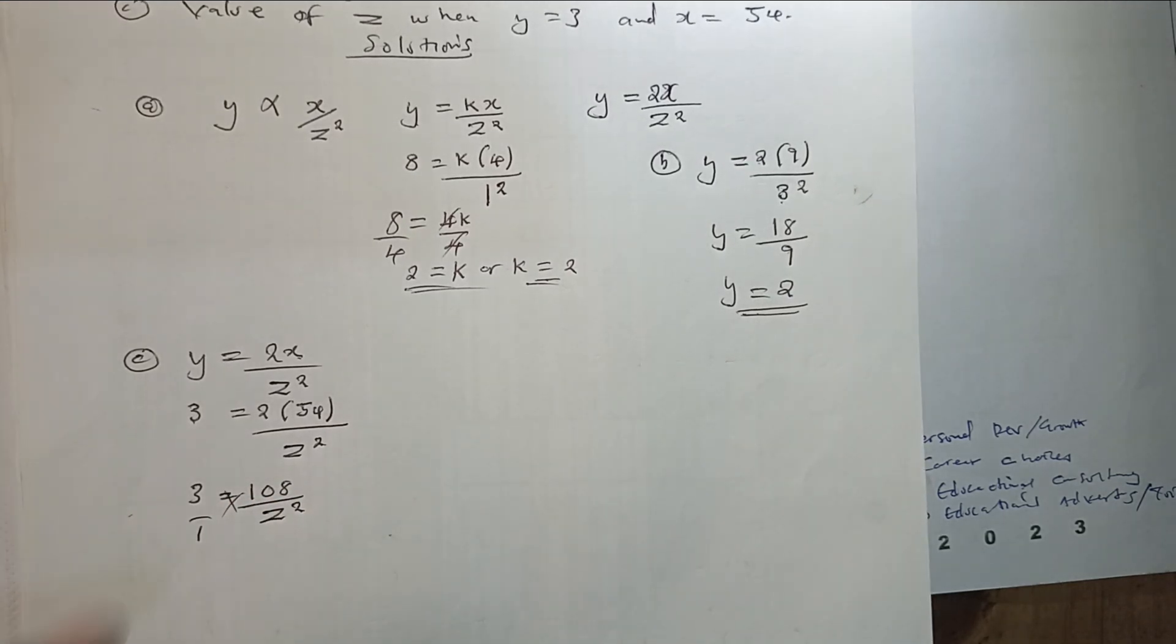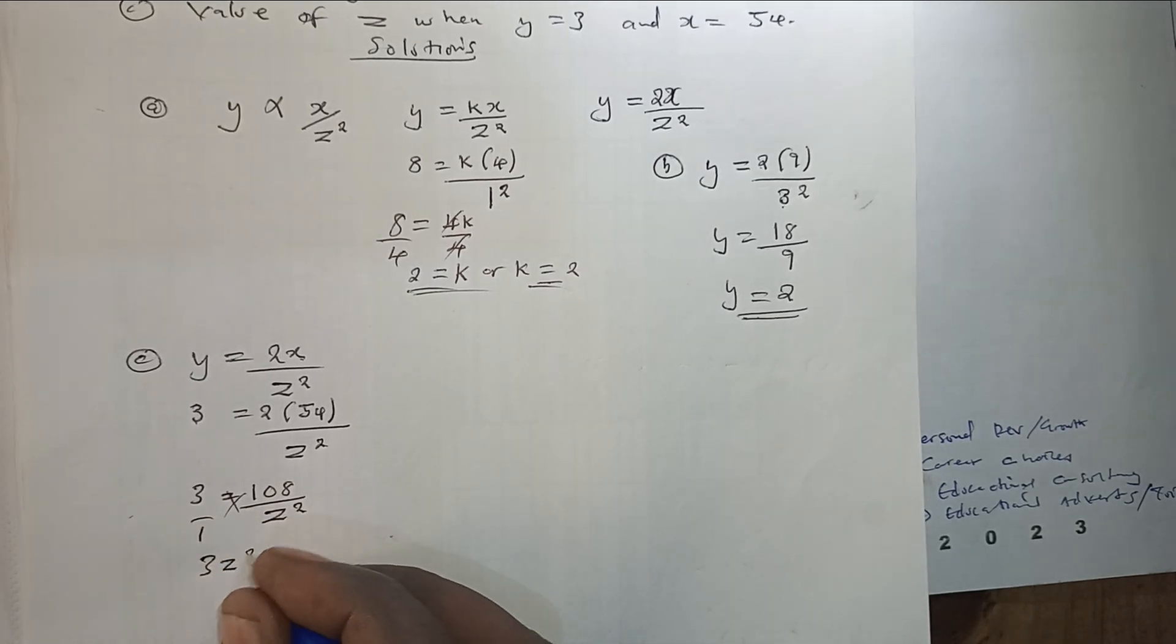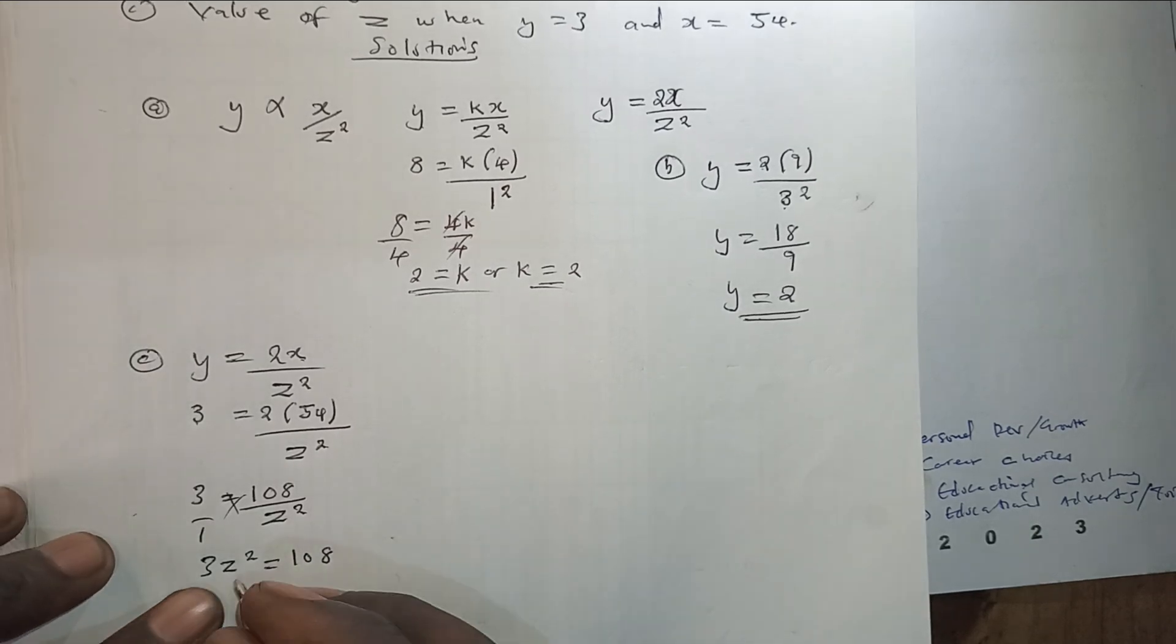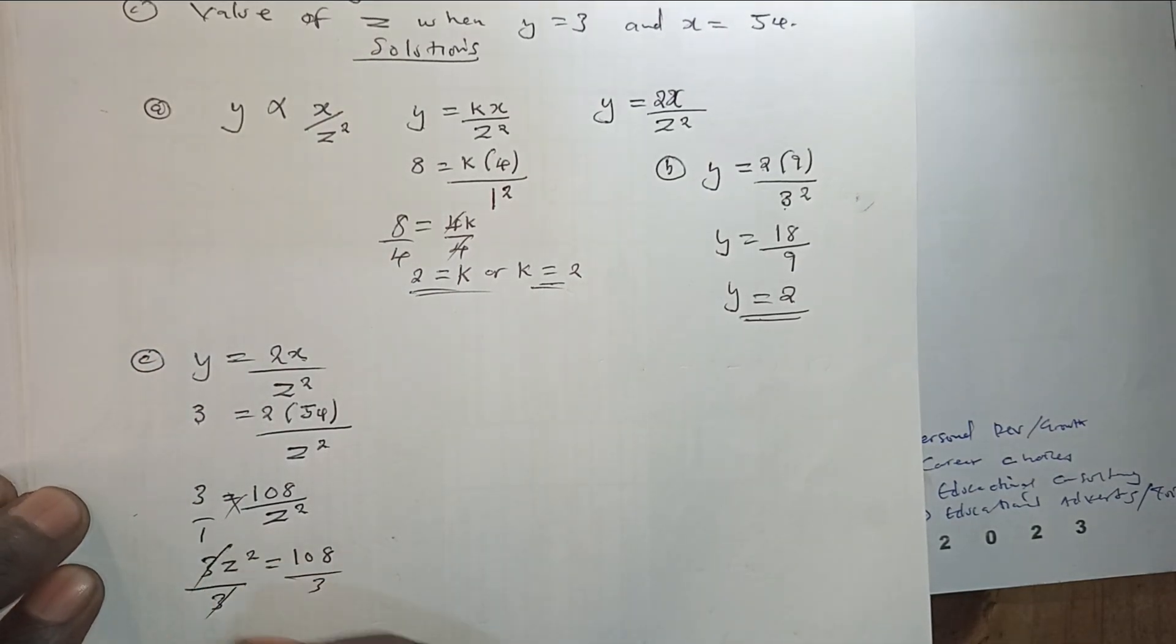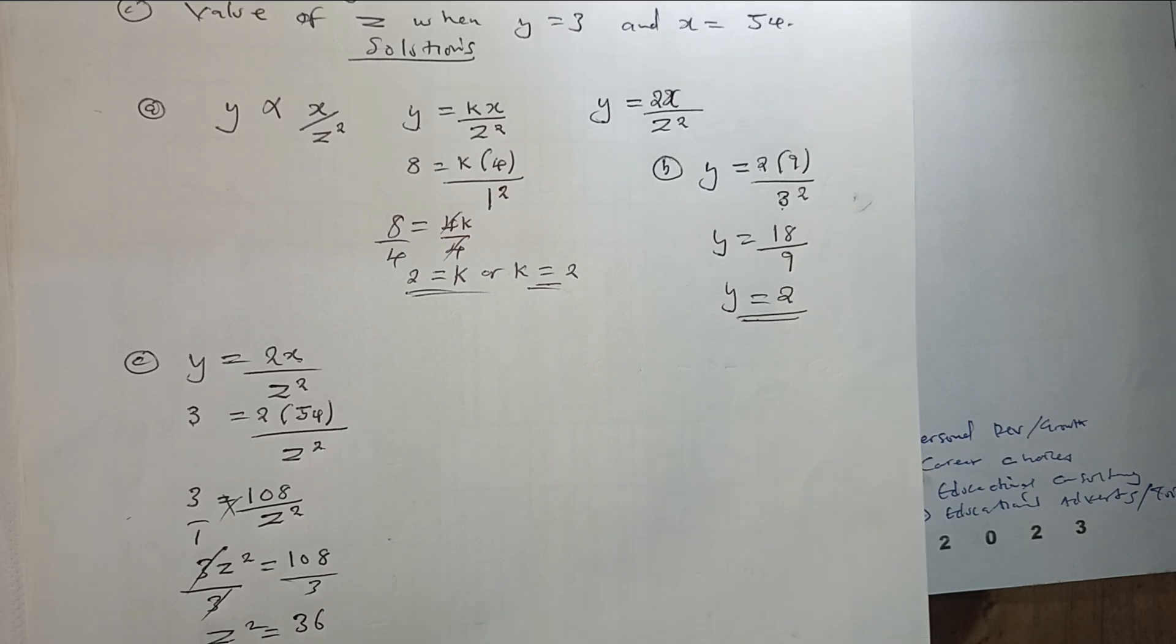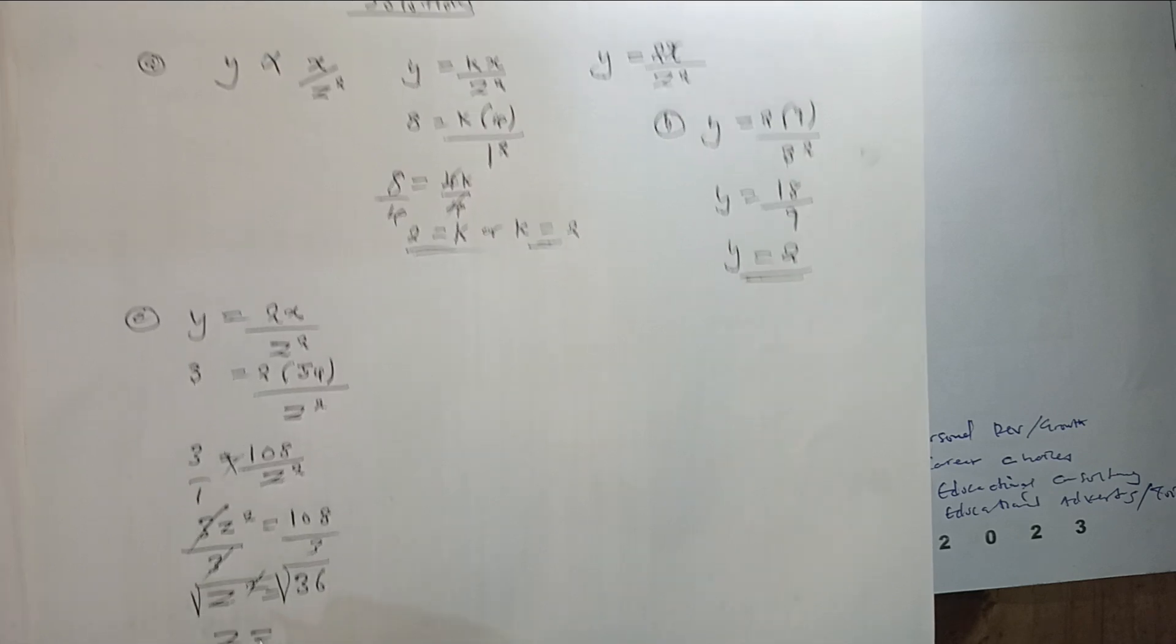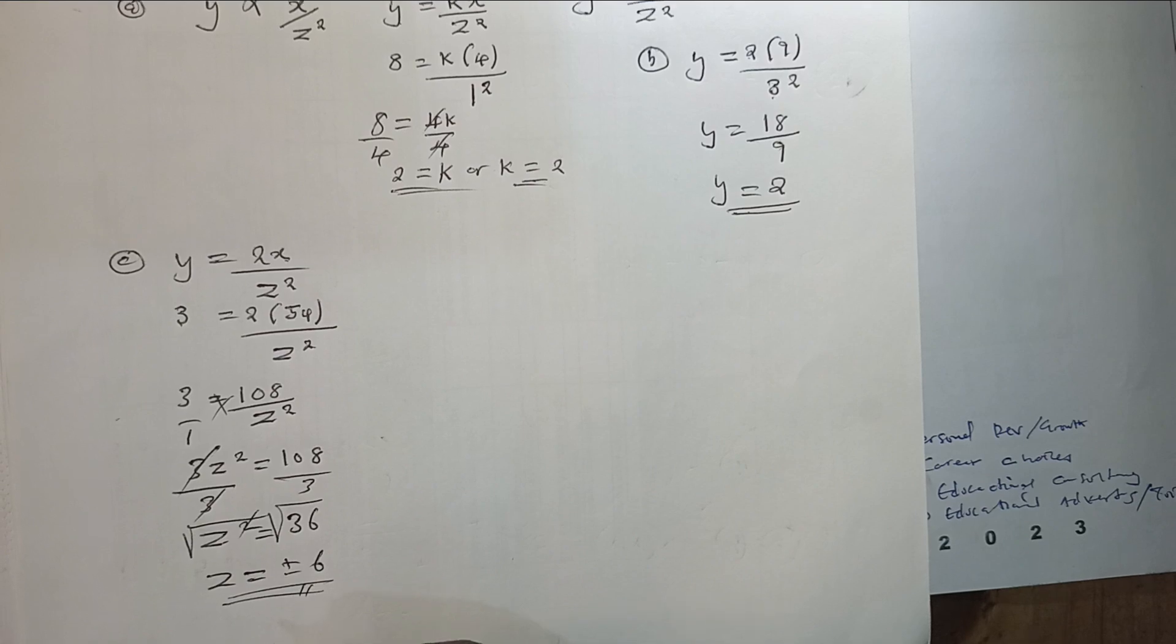So we are going to have 3 times Z squared, we are going to have 3Z squared equals 108. And then our interest is finding the value of Z. So we can divide throughout by 3, and Z squared is going to be equal to 36, and then we find the square root of 36. So Z equals positive or negative 6. So this is what we are going to get for this question.